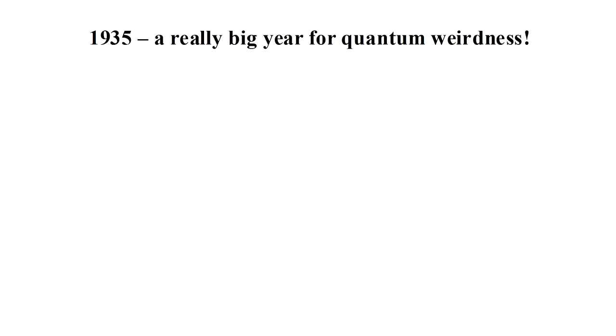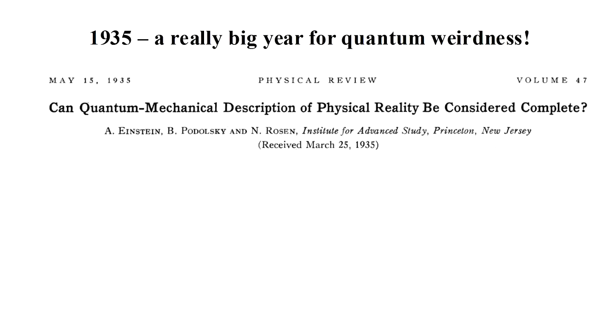In particular, 1935 was a big year for this. First, a paper appeared by Einstein, Podolsky, and Rosen titled: Can Quantum Mechanical Description of Physical Reality Be Considered Complete?